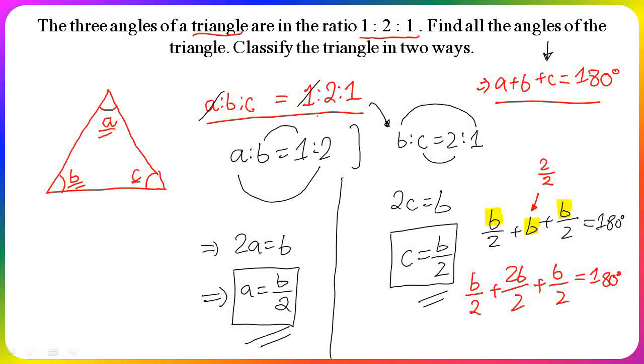After collecting like terms and cancelling common factors, we get 4B/2 = 180 degrees. After division, we get B = 90 degrees.